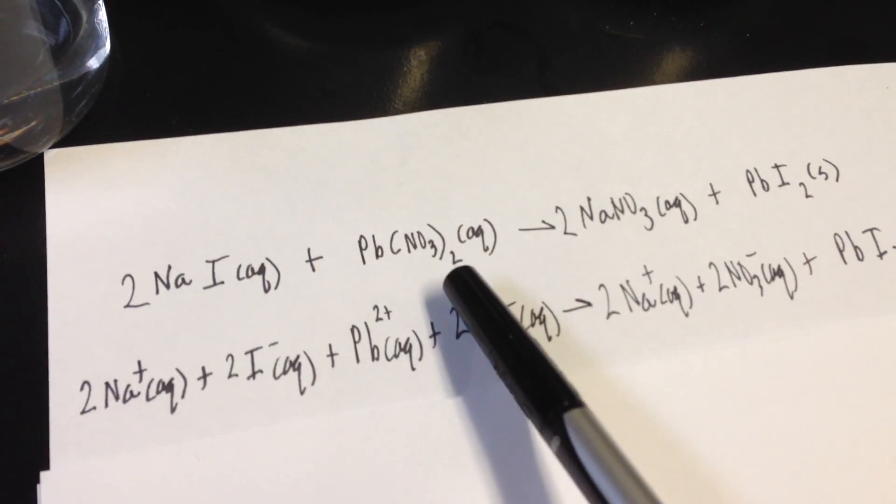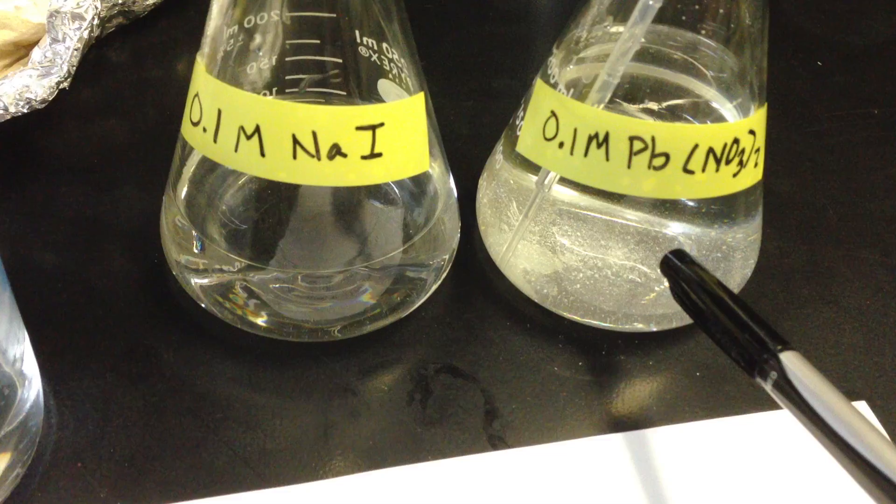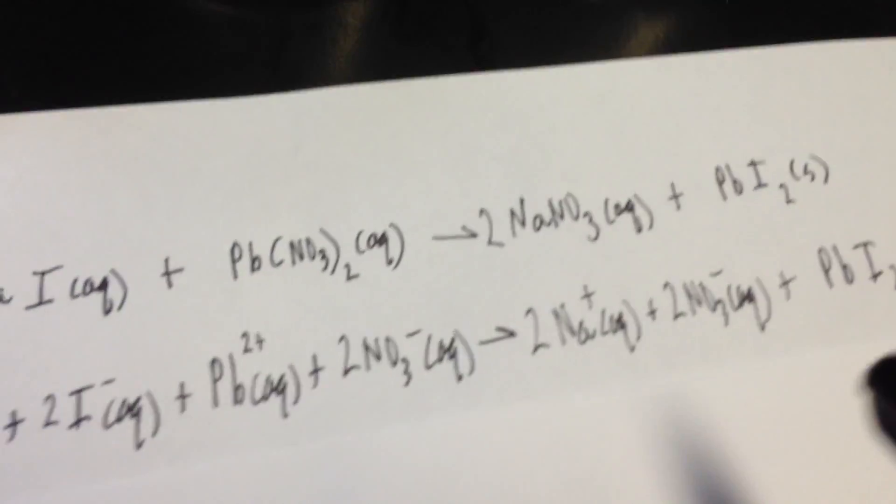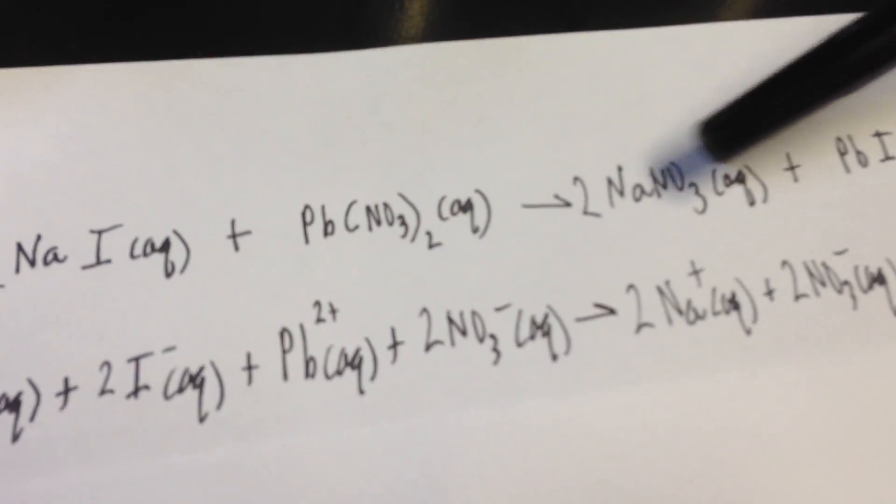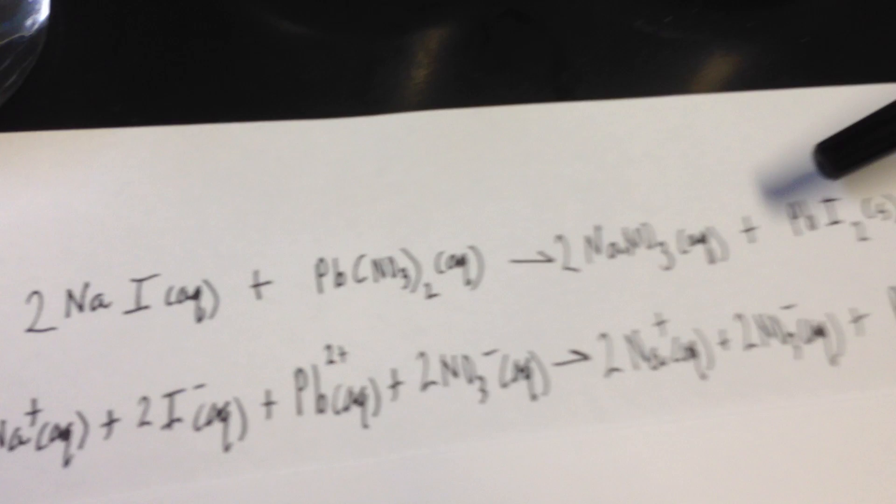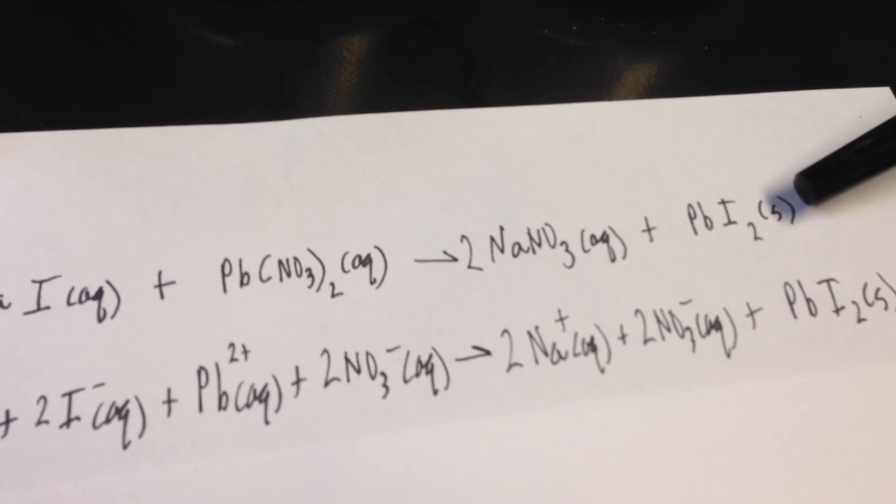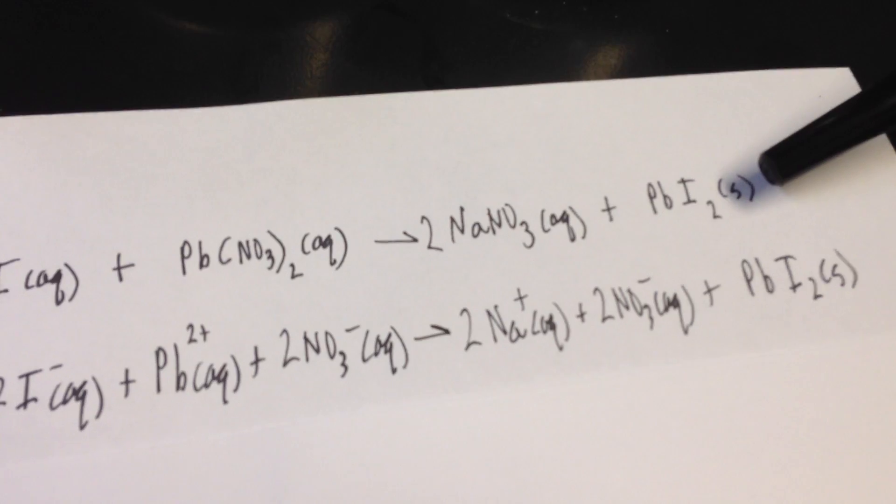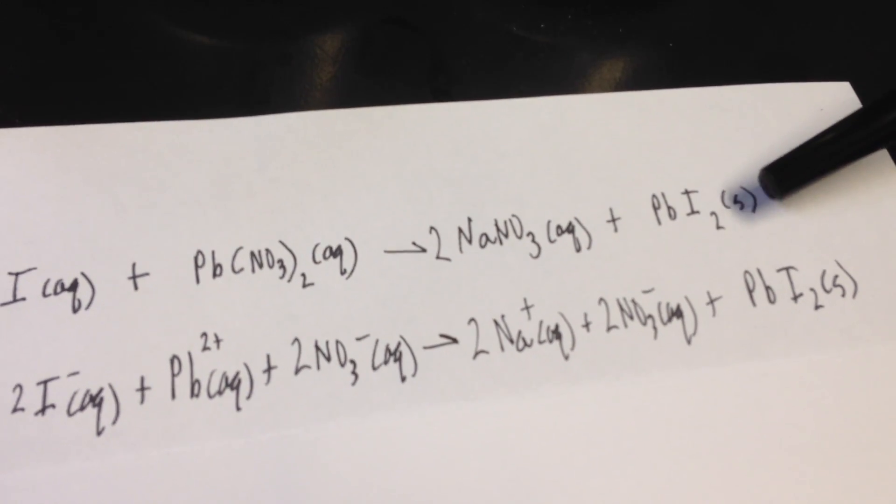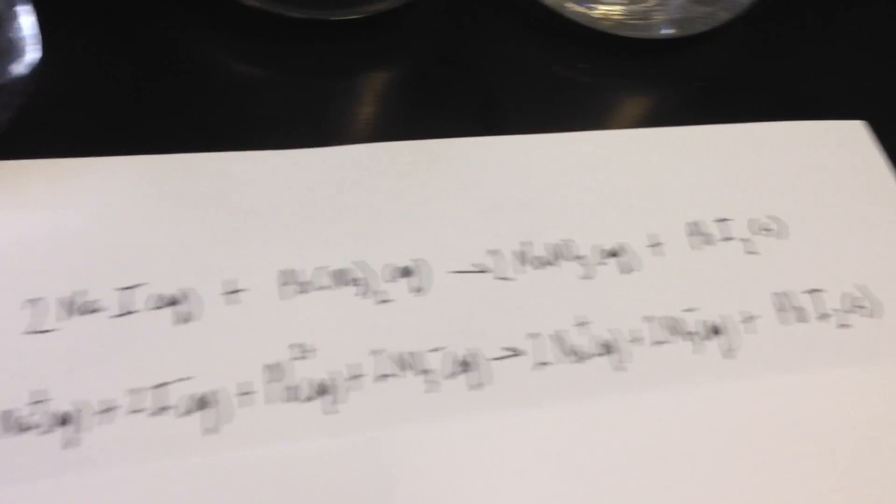And lead nitrate, AQ, dissolved in water. Voila, there it is. And I claim when they react together, I'll form sodium nitrate, which should stay in solution, and lead iodide, solid, so a precipitate will form. Now, I know that's going to be a solid based upon my solubility rules, which you guys should have learned by now. So let's go ahead.